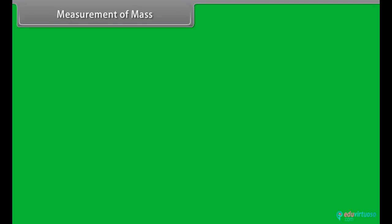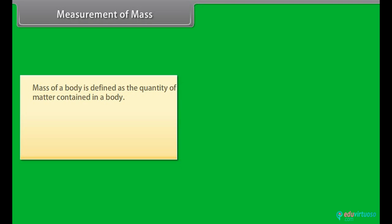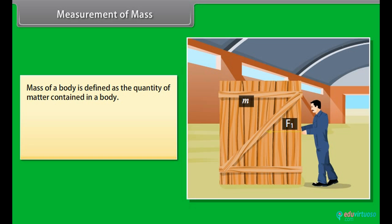B. Tunneling microscopy is used to measure very tiny distances because it has very high resolution, for example, calculation of size of a molecule.